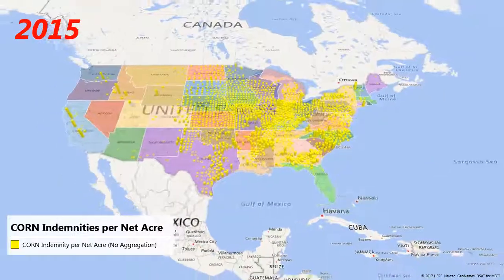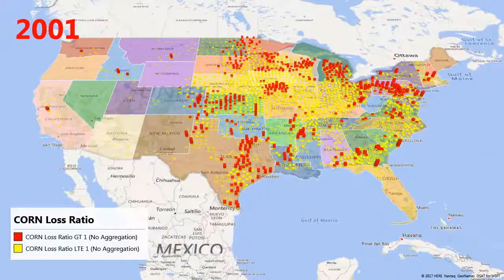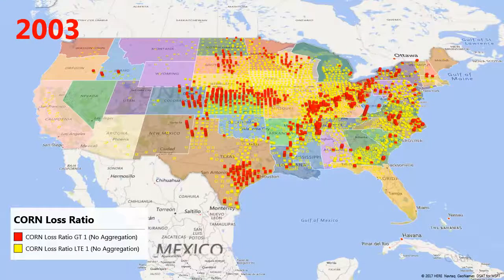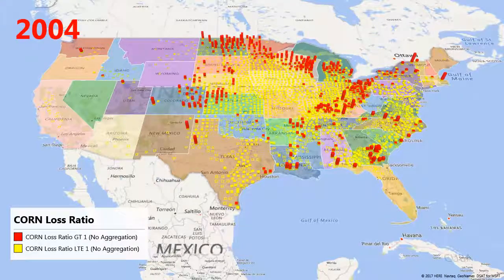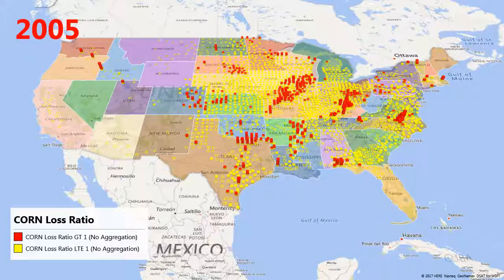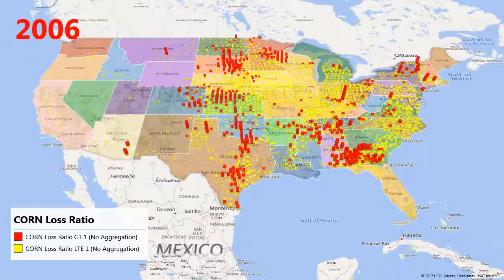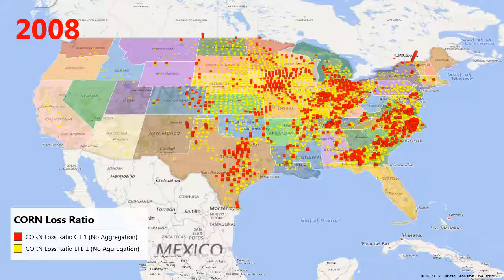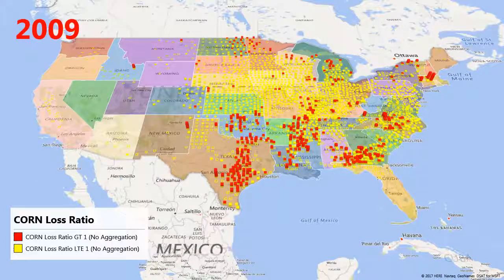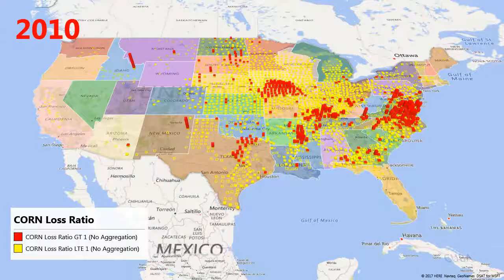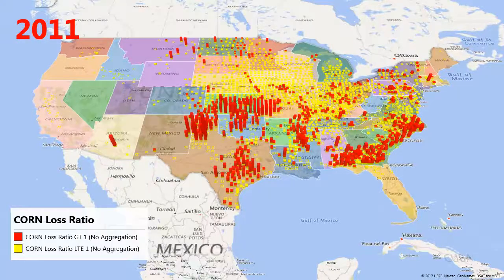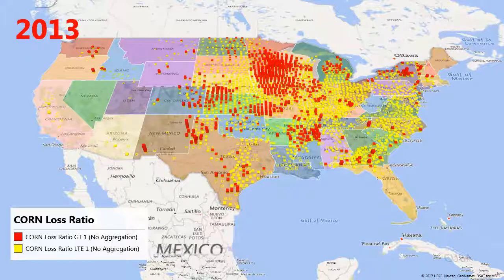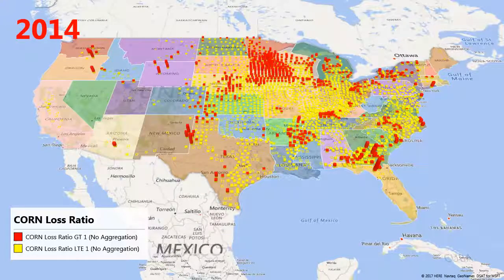Corn loss ratios for each county from 2001 to 2015 are shown in this scene. The red portion of the column denotes that the loss ratio exceeded one for a given year. Depending on the year, the loss ratio can vary widely around one and can be geographically concentrated. Over the 15-year study period, the year with the lowest percentage of counties with loss ratios greater than one was 14% in 2005. 47% of all counties with corn revenue crop insurance in 2012 had loss ratios that exceeded one.